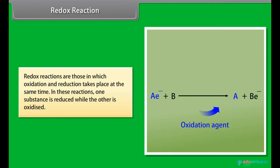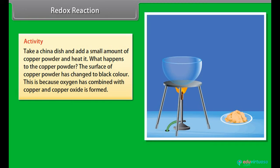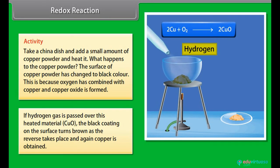Redox reaction: Redox reactions are those in which oxidation and reduction take place at the same time. In these reactions, one substance is reduced while the other is oxidized. Activity: Take a china dish and add a small amount of copper powder and heat it. What happens to copper powder? The surface of copper powder has changed to black colour. This is because oxygen has combined with copper and copper oxide is formed.